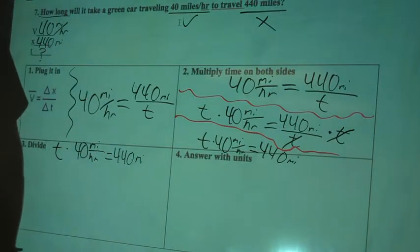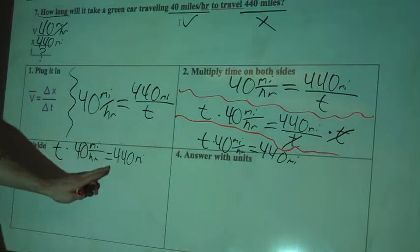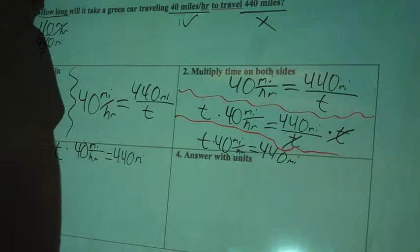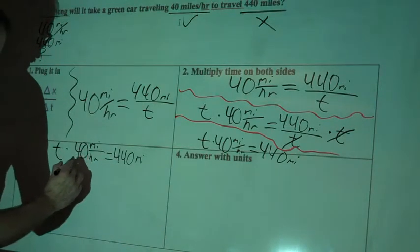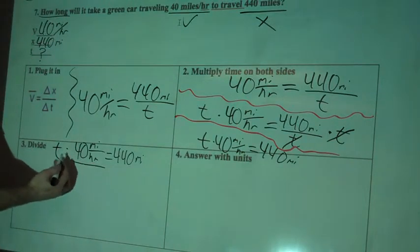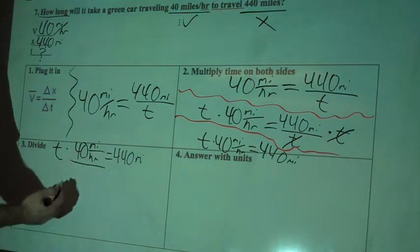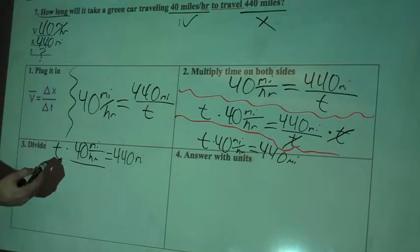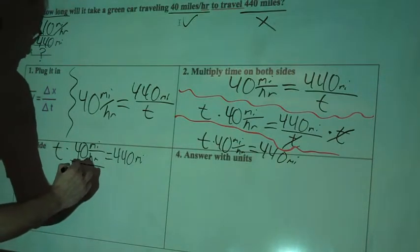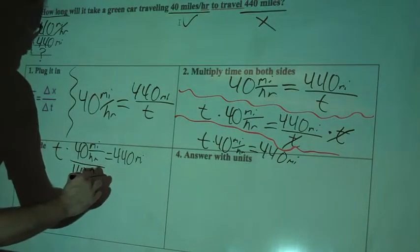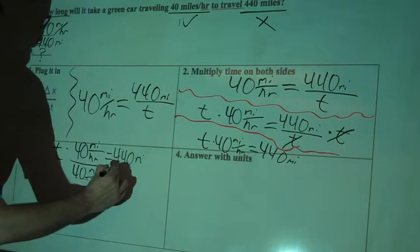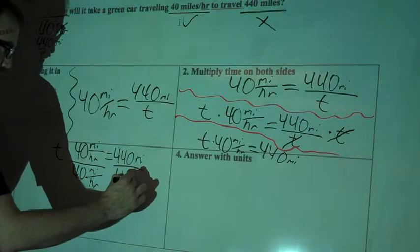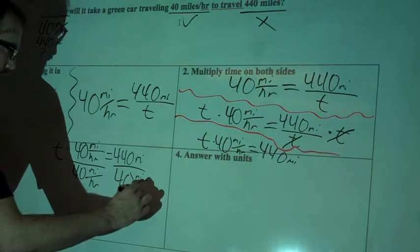We're going to get T by itself, so we're going to get rid of anything on that side of the equal sign. The only thing over there is 40 miles per hour. So we'll divide, since that's multiplied by T, we'll do the opposite operation, which is division, to get rid of this. So we'll divide by 40 miles per hour. And on this side, we'll divide by the same thing, 40 miles per hour.